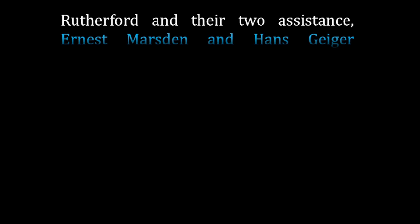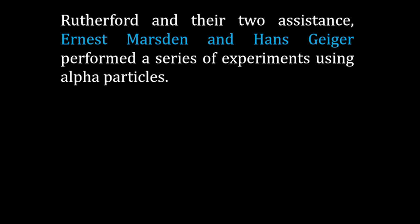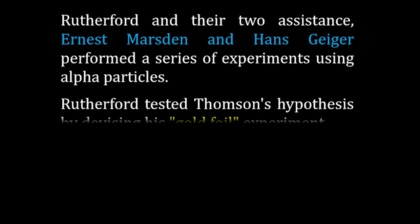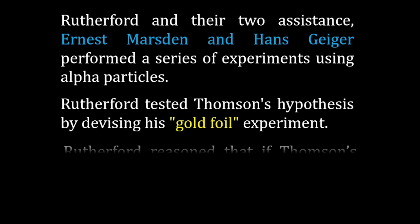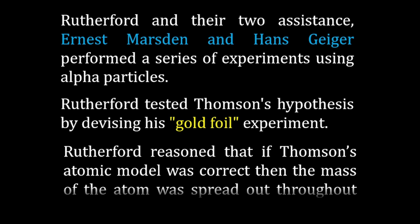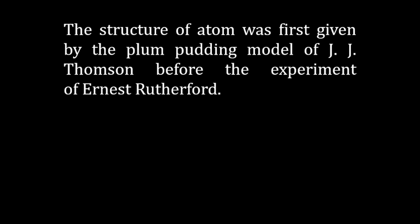Rutherford and his two assistants, Ernest Marsden and Hans Geiger, performed a series of experiments using alpha particles. Rutherford tested Thomson's hypothesis by devising his gold foil experiment. Rutherford reasoned that if Thomson's atomic model was correct, then the mass of the atom was spread out throughout the atom.